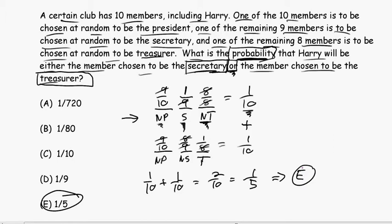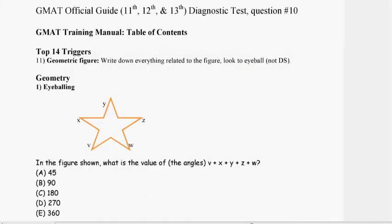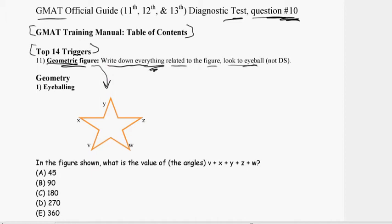That would take a student of mine about 60 seconds. As soon as they see this probability of multiple events, they know to use this five-step method. That's how to attack this very tricky probability question. In this video, I'm going to explain two questions, so let's move on to the second question in our diagnostic — question number 10. Again, in your GMAT training manual table of contents, you'll see a top 14 trigger: geometric figure. As soon as you see a geometric figure — that star is a geometric figure — write down everything related to the figure and look to eyeball. This star that I have is not an exact perfect representation of what's in the official guide, but it's close enough.